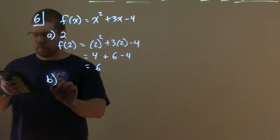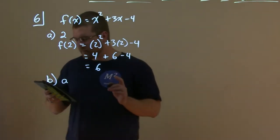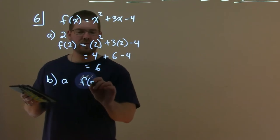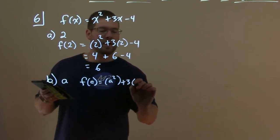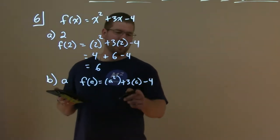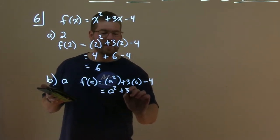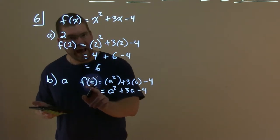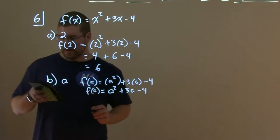Part B, another one. We're going to evaluate it at a. Well, that's actually not too bad either. f(a), replace a in for x, equals a squared plus 3 times a minus 4. You can write it as a squared plus 3a minus 4. We're evaluating it at a. That's it.